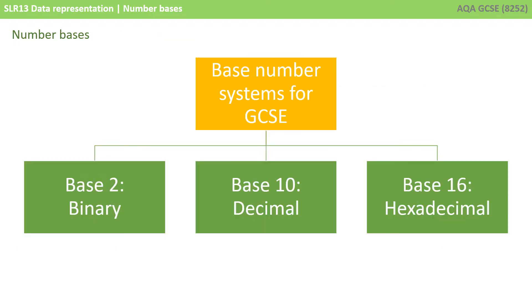There are two other number systems that you need to know about for the GCSE: base 2 binary and base 16 hexadecimal. Everything I've gone through so far might seem really obvious. After all, you've been counting using decimal ever since primary school. But the principles involved are exactly the same for any other base number system, including base 2 and base 16.